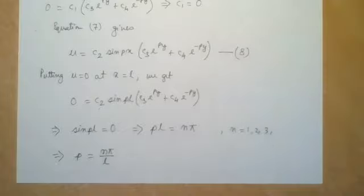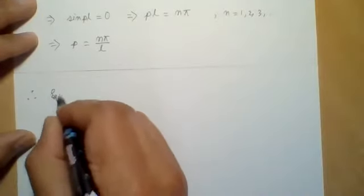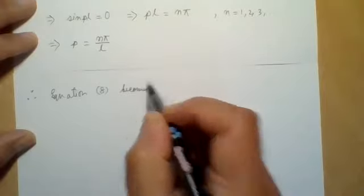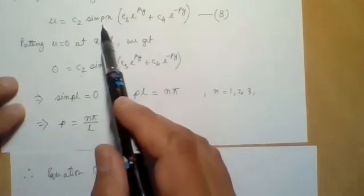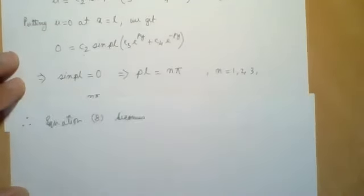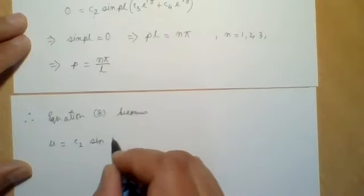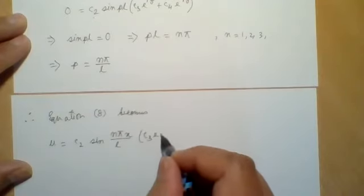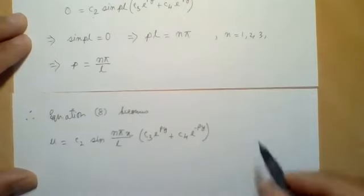Substituting p = nπ/l into equation 8, equation 8 becomes: u = c₂sin(nπx/l) · (c₃e^((nπ/l)y) + c₄e^(-(nπ/l)y)). Let us call this equation number 9.